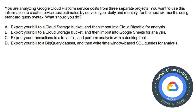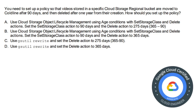Moving on to the next question. You are analyzing Google Cloud Platform service costs from three separate projects and want to create service cost estimates by service type, daily and monthly, for the next six months using standard query syntax. The options are: A) Export to Cloud Storage then import into Cloud Bigtable; B) Export to Cloud Storage then import into Google Sheets; C) Export to a local file and use a desktop tool; D) Export your bill to a BigQuery dataset and write time-window-based SQL queries for analysis. The correct answer is option D.